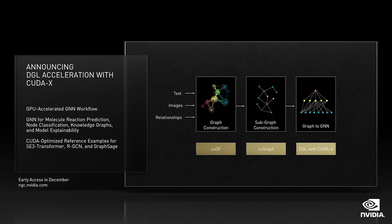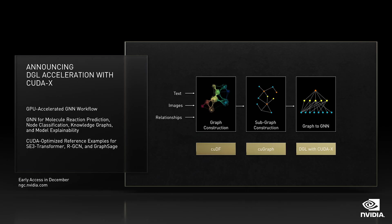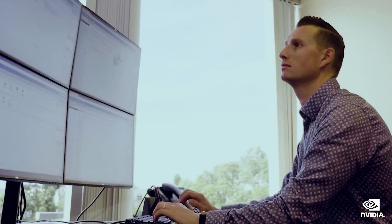Deep Graph Library, DGL, is a Python library built to implement graph neural networks on top of existing deep learning frameworks. We're working with the DGL community to accelerate GNN processing like we have with CNNs, RNNs, and Transformers — from constructing the graph to sampling subgraphs and projecting graphs into a DNN framework — so developers can train and inference graphs with billions and trillions of edges.